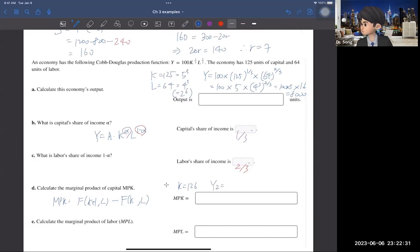let's say the Y2 is 100 times 126 to the power of one-third times 64 to the power of two-thirds. And this one is actually giving you 8,021.3, up to one decimal. And then, you can see the difference with the 8,000 is just 21.3.